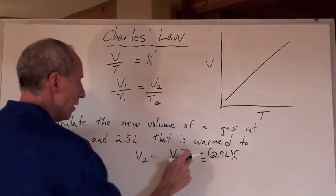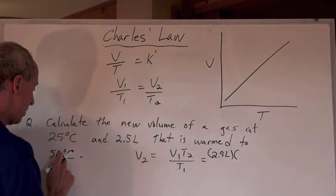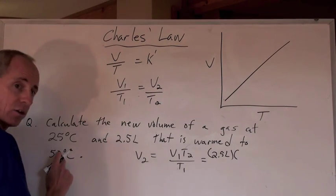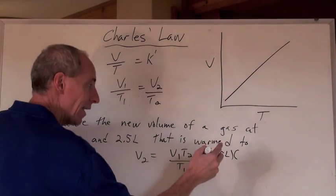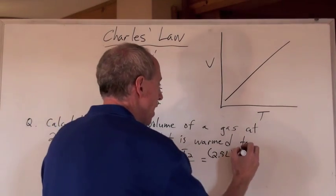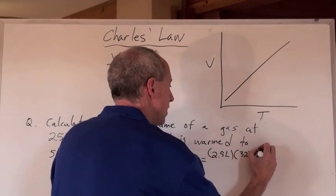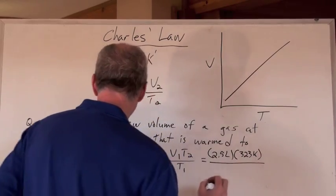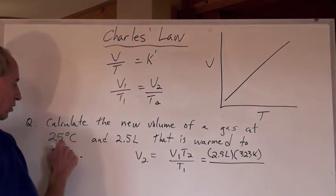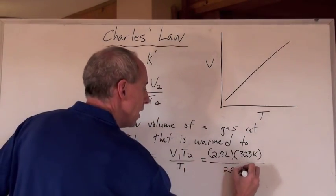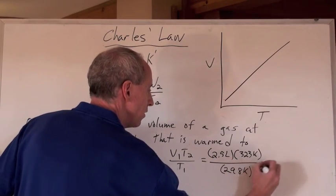So what is that T2 that we're looking at here? Well, the T2 is 50 degrees Celsius. And so adding 273 to that gives you 323K, that's Kelvins, divided by the temperature initial, 25 degrees Celsius, which is 298K. Do the math.